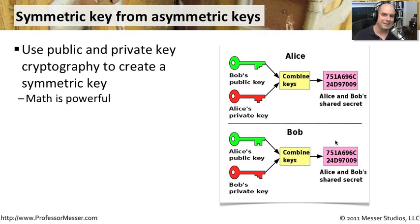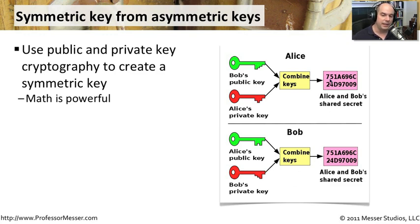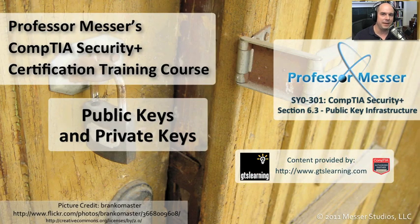On the other side, Bob does the exact same thing. He doesn't have access to Alice's private key, but he does have his own private key. So he grabs Alice's public key and his private key — the other pair of the same two that Alice used — and runs the same algorithm. It magically creates exactly the same key. So when Bob receives the message encrypted with this symmetric key, he simply runs the same algorithm to arrive at the same symmetric key and decrypt the information. It's a very simple process, and one that you would not be able to do without this public and private key methodology.